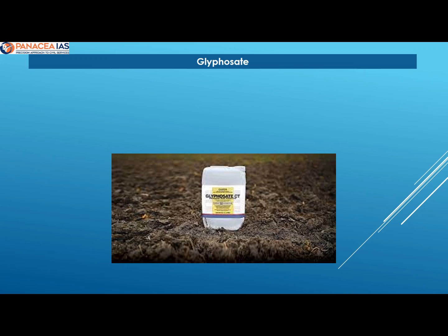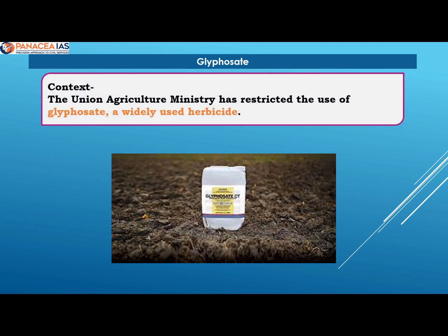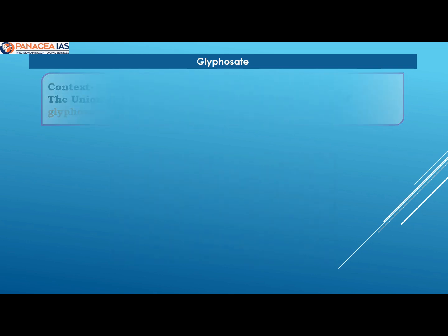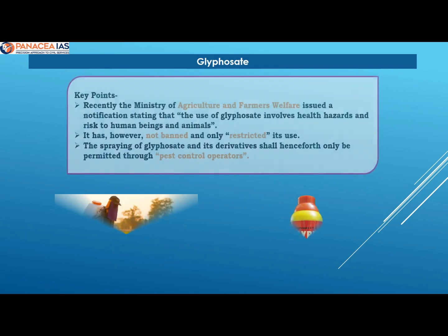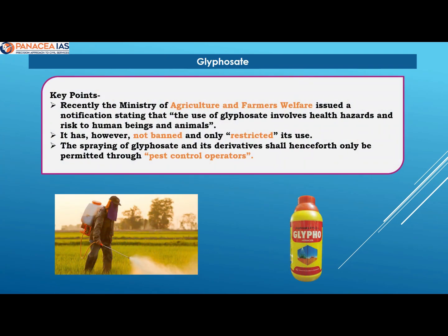So recently, government ne Glyphosate, which is widely used as a herbicide, ke use pe restriction laga diya hai. According to the Ministry of Agriculture and Farmers Welfare, Glyphosate ke use se human beings as well as animals ko health hazards honne ke chances hai. Jis ki wajah se ministry ne notify karke is ke use ko restrict karne ko kaha hai.